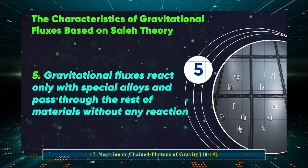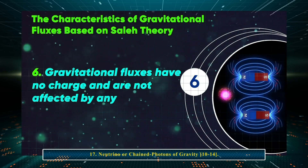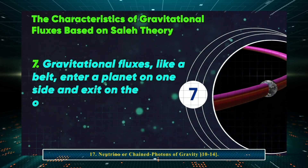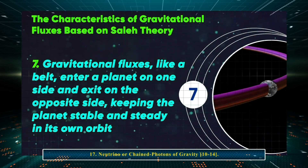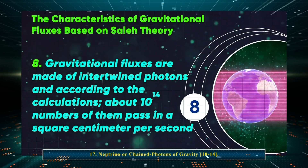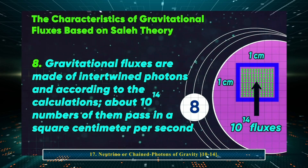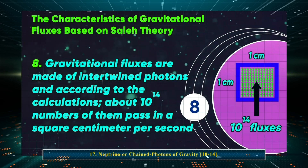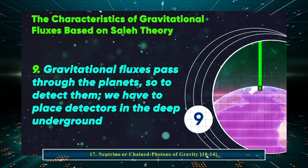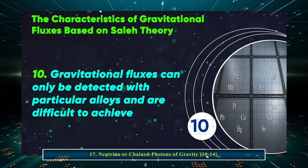Gravitational fluxes react only with special alloys and pass through the rest of materials without any reaction. They have no charge and are not affected by any magnetic fields. Like a bulb, gravitational fluxes enter a planet on one side and exit on the opposite side, keeping the planet stable and steady in its orbit. About 10 to the power of 14 of them pass per square centimeter per second. To detect them, we have to place detectors deep underground, and they can only be detected with particular alloys.